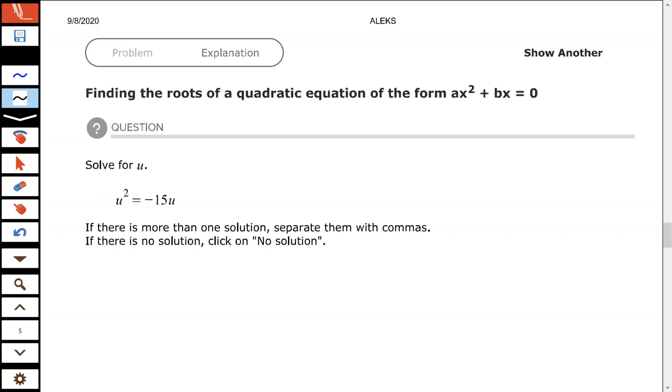All right, so here find the roots of the quadratic equation of the form ax squared plus bx equals zero. So we have u squared equals negative 15u. Now I want all of my terms on one side of the equation and the equation set equal to zero, that expression set equal to zero.